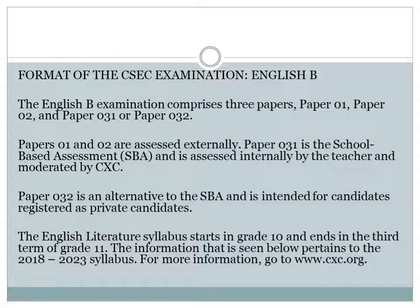The format of the CSEC examination for English B comprises three papers. There is Paper 1, there is Paper 2, and there is Paper 031 or Paper 032. The latter two — 031 and 032 — are basically the SBAs, and as time progresses I'll go into details on how to do the SBAs. But for this video in particular, I just want to tell you the basic changes that have been made to the exam papers. Papers 1 and 2 are assessed externally. Paper 031 is a school-based assessment assessed internally by the teacher and moderated by CXC. Paper 032 is an alternative to the SBA intended for candidates registered as private candidates.